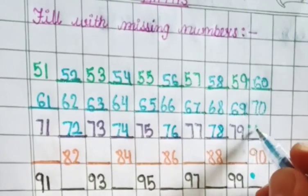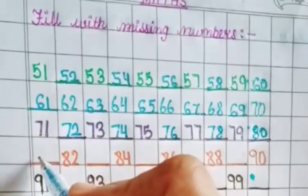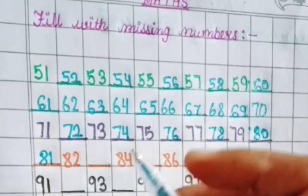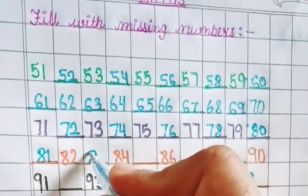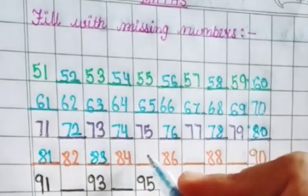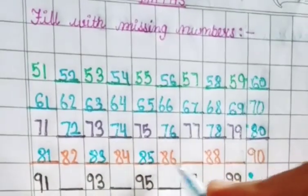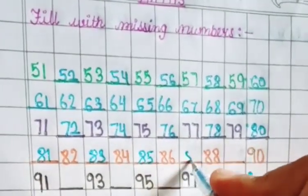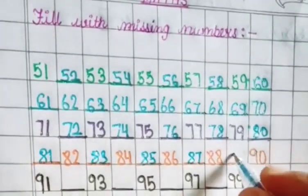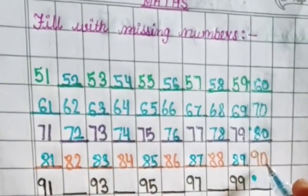Now you write. 8, 0, 80. 8, 1, 81. 8, 2, 82. 8, 3, 83. 8, 4, 84. 8, 5, 85. 8, 6, 86. 8, 7, 87. 8, 8, 88. 8, 9, 89. 9, 0, 90.